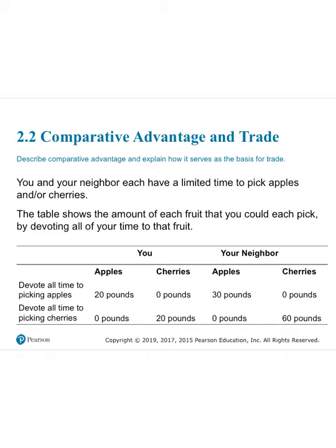Moving on to comparative advantage and trade. Suppose you and your neighbor each have an apple and cherry tree, but time is a limited resource. If you devote all your time to apples, you pick 20 pounds; all to cherries, 20 pounds. Your neighbor, devoting all their time to apples, picks 30 pounds; all to cherries, 60 pounds.